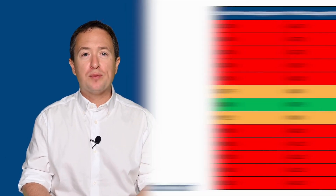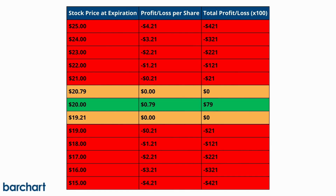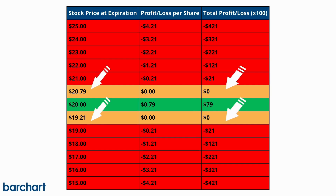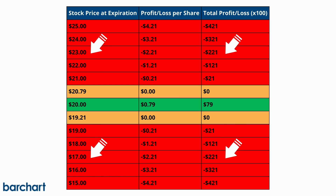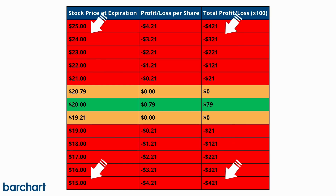Here's a quick profit and loss table at different price points to better illustrate how a short straddle can play out. Notice how there's only one price where you'll get maximum profit for the trade, and that's your strike price. Any movement above and below the strike price and breakeven points will cause you to start losing money on the trade.